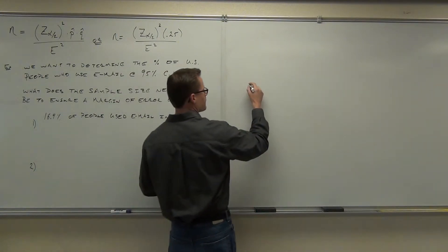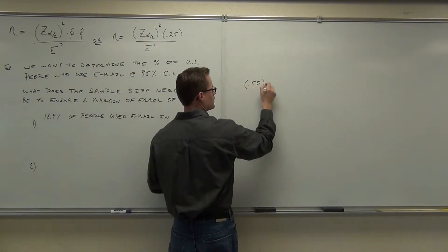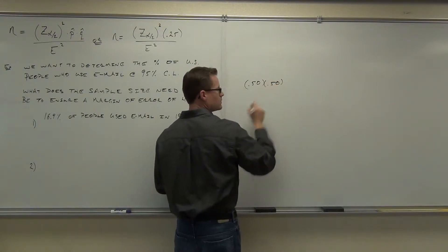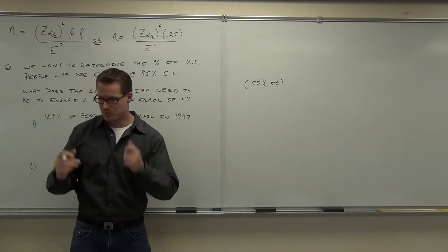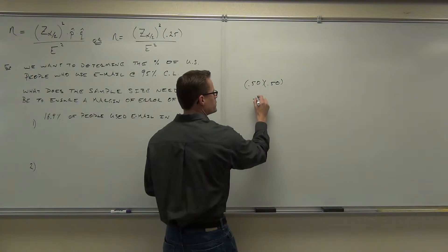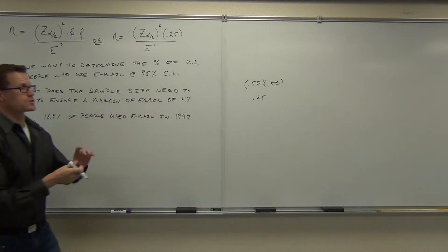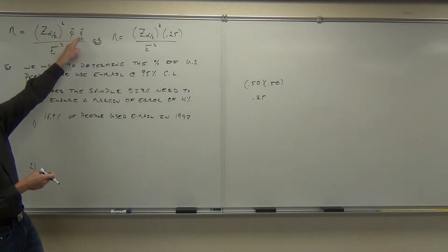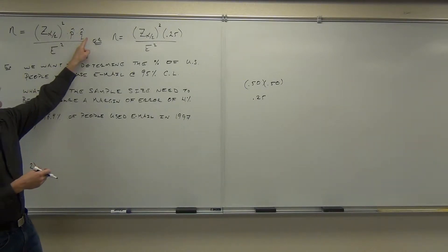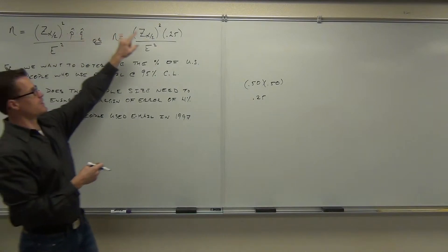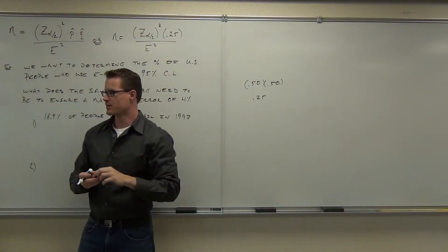Can you tell me what is 0.50 times 0.50? Where this 0.25 is coming from is actually this. You're multiplying this times this, only you're assuming the worst-case scenario, 50-50. 50-50 means this little section is 0.25. Are you with me on where that comes from?